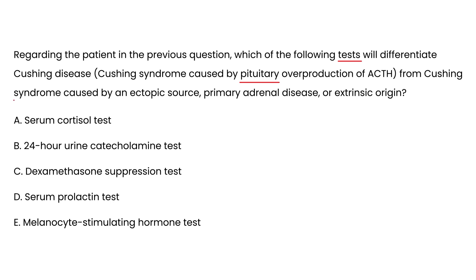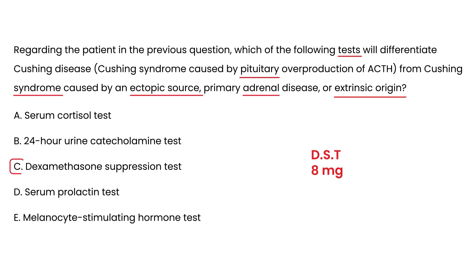For the second question regarding the same patient: which test will differentiate Cushing's disease from Cushing's syndrome caused by ectopic ACTH, primary adrenal disease, or exogenous origin? The answer is the high-dose dexamethasone suppression test using 8 mg of dexamethasone, which allows you to differentiate whether the primary source is adrenal, pituitary, or ectopic.